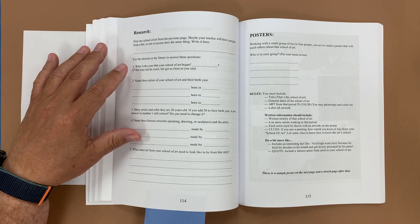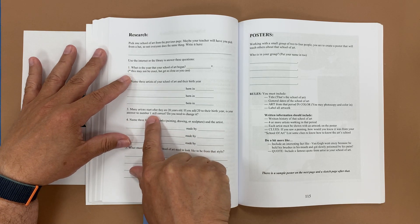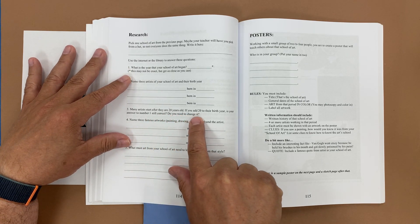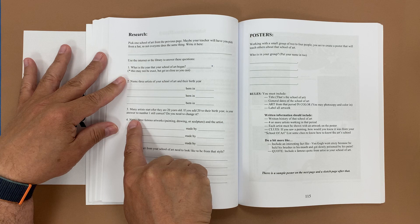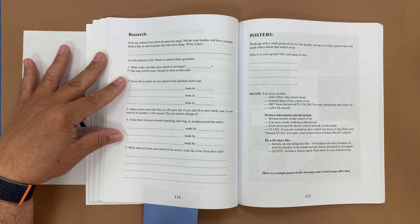Name three artists and the schools of art that they do and the year that they're born in. Many artists start after they're 20 years old. If you had 20 years to their birth, is the answer to number one still correct? Do you need to change it?